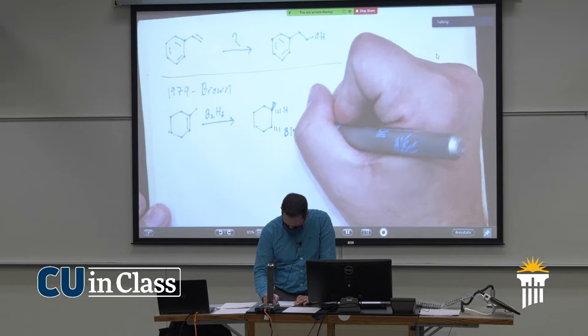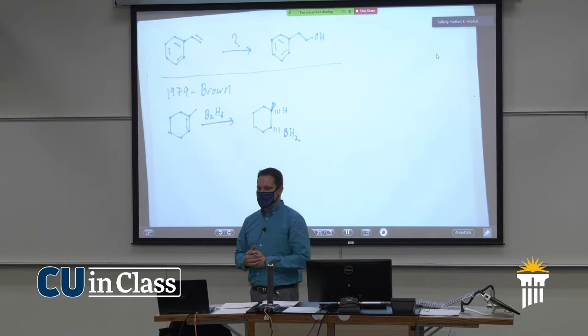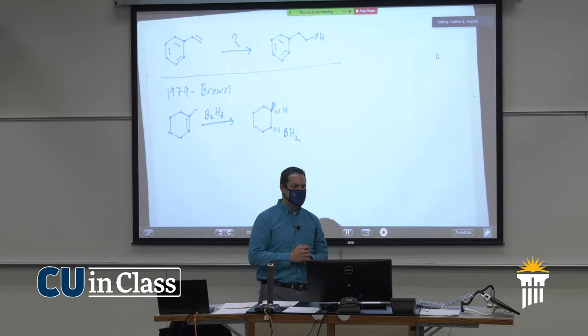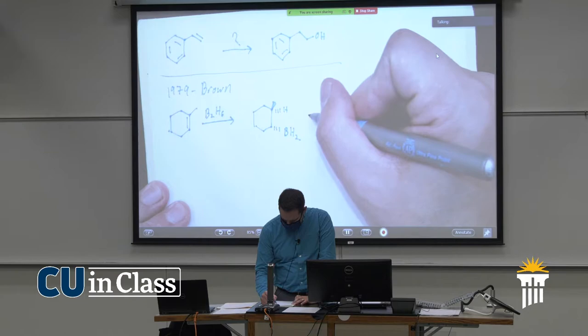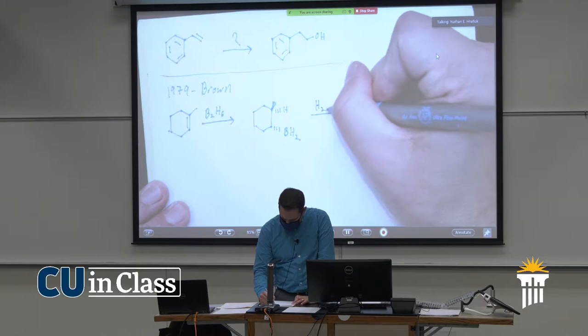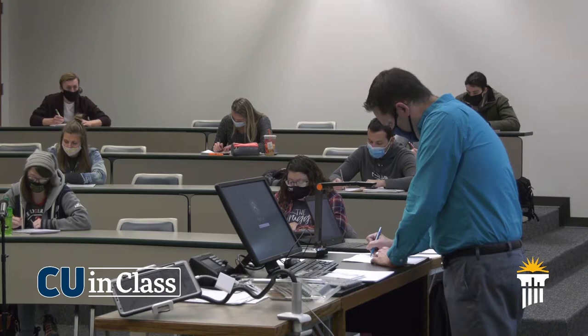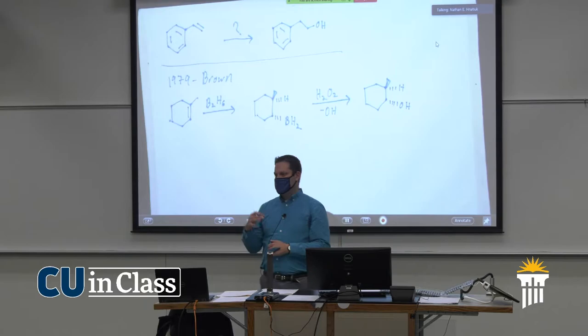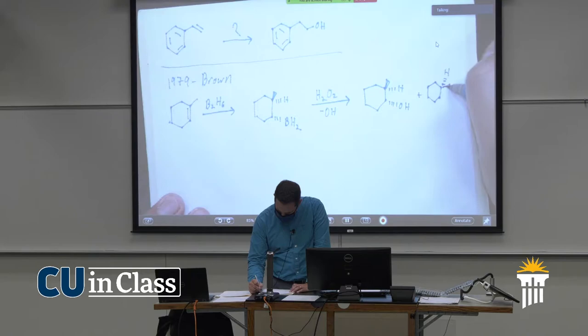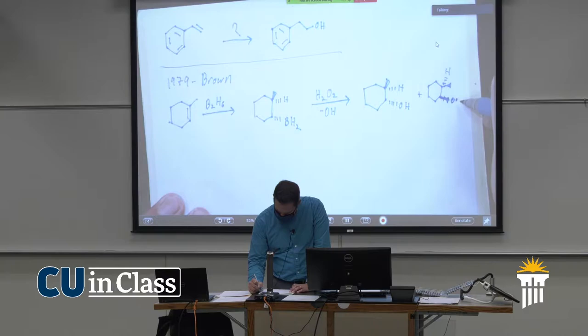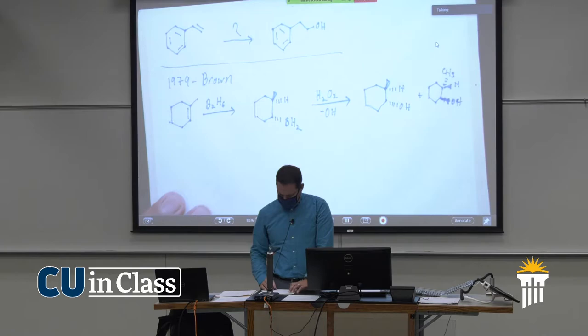Notice how the boron and the hydrogen are on the same side — you do get that same-side addition. And then if he used peroxide and OH⁻, some sort of base, that would remove the boron and put an alcohol in its place. It could also add to the top, so you would also get the enantiomer in this case.